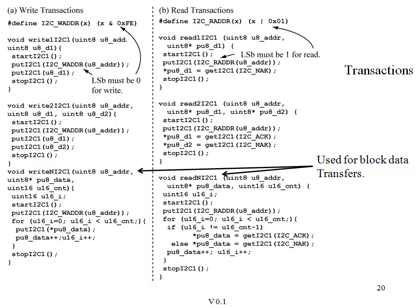Let's look at a couple of specific code examples. For a write of one byte: we begin with a start, output the address with the write bit set, output one data byte, and then stop. To write two data bytes: again a start, send the address with the write bit set, two data bytes, and a stop. Read transactions operate similarly: start, write the address with the read bit set to one, then use the get function to read a single byte, using I2C NAK to indicate this is the last byte requested. When requesting two bytes: start, put the address with the read bit set, get the first byte and acknowledge it indicating we'd like more data, read the second byte and do not acknowledge it indicating end of transaction, then terminate with the stop function.